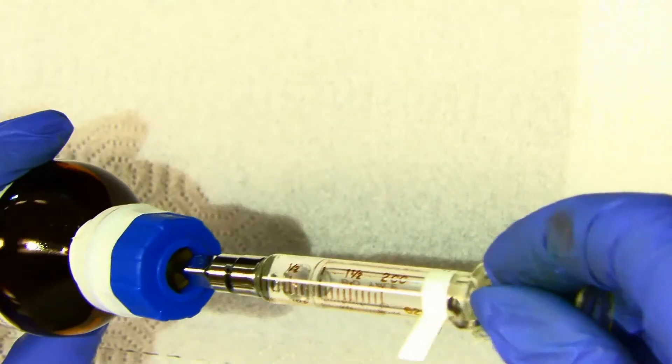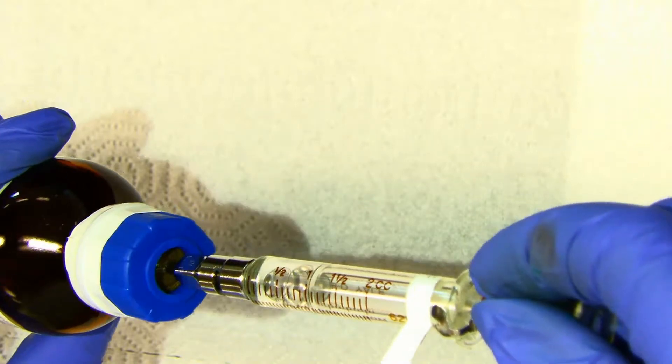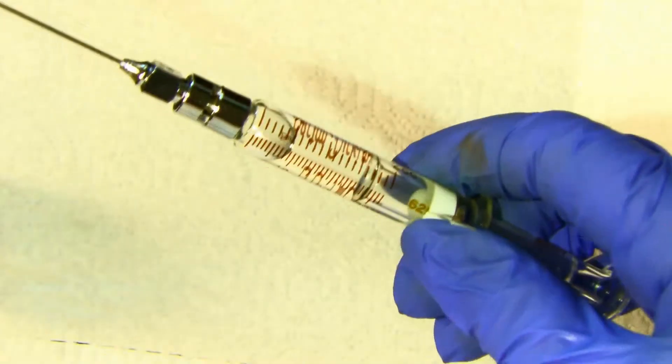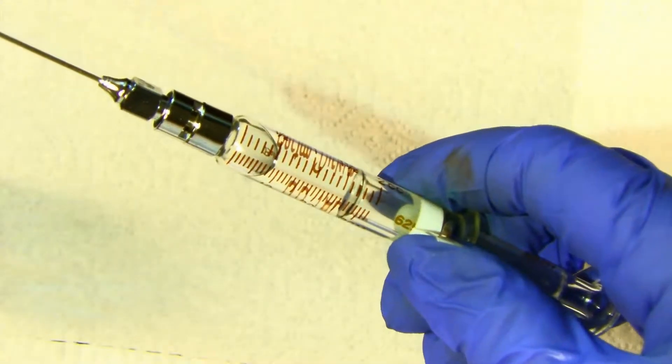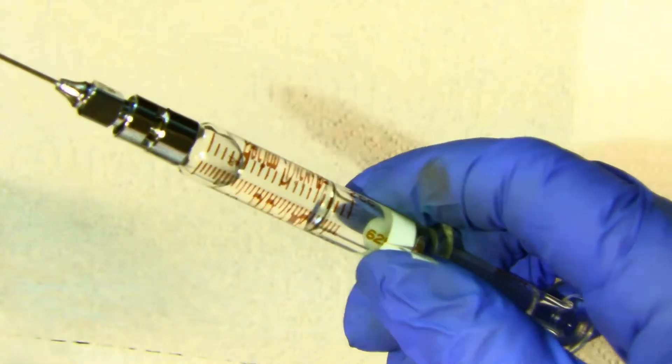You may see that there's an air bubble in there now. We will get rid of the air bubble. Now we tilt it upward, and you can see the bubble has gone to the top.